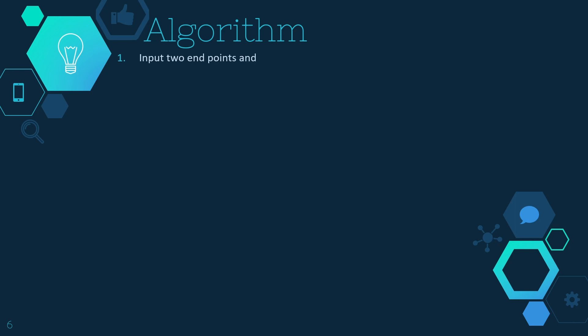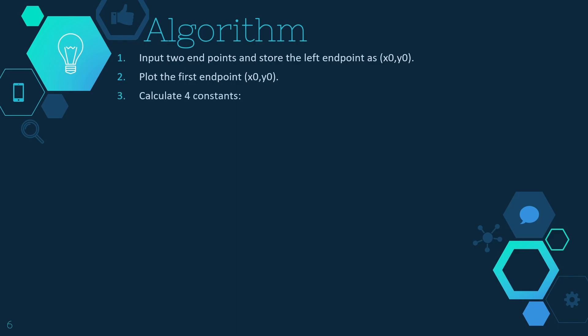Now let's look at the algorithm. Step one: input two endpoints and store the left endpoint as x0, y0. Step two: plot the first endpoint x0, y0 on the graph. Step three: calculate four constants — delta x, delta y, 2 delta y, and 2 delta y minus 2 delta x. Step four: calculate the initial decision parameter p0, which is 2 delta y minus delta x.